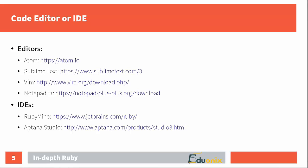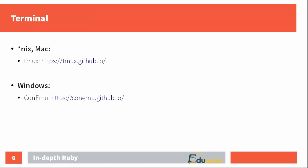If you're looking for an integrated development environment, you can try RubyMine, though it is not free. There's also Aptana Studio, which is free. Just make your choice and install any editor or IDE that you see fit. You'll also need a terminal. For *nix systems you may use a Terminal Multiplexer, and for Windows I really recommend using a Console Emulator like ConEmu, because the default Windows command-line interface doesn't support colorized output or tabs.